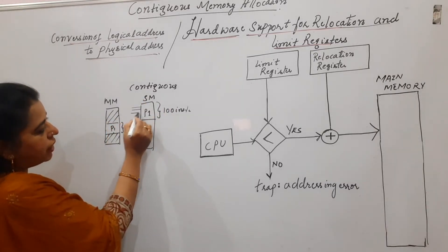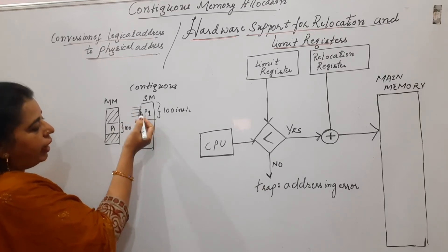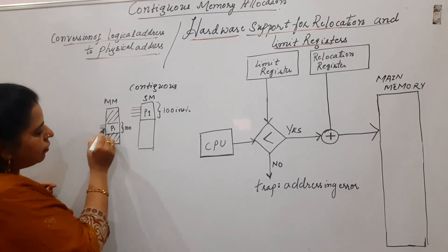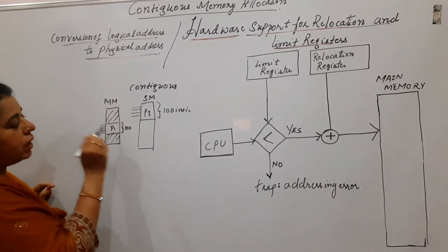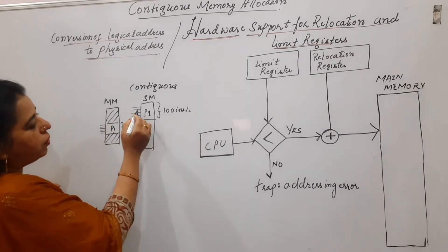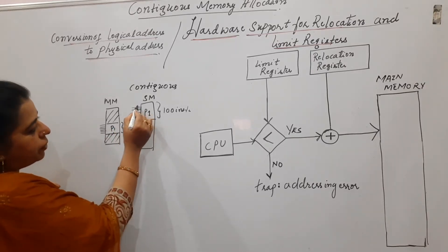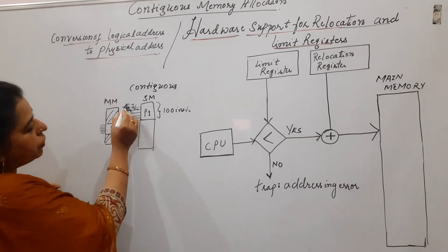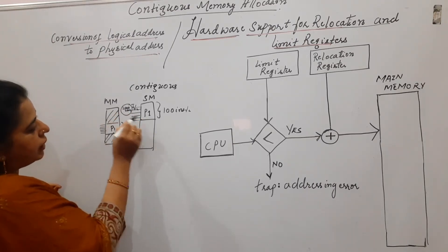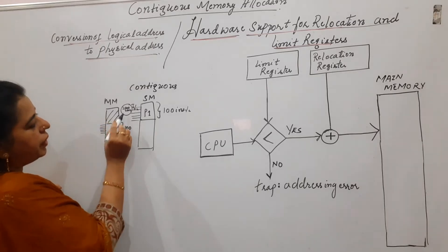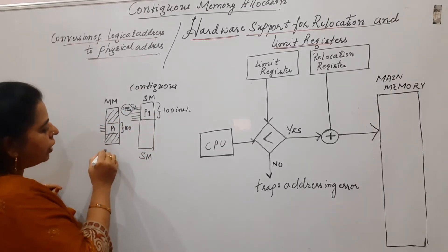If any instruction from process P1 has to be executed by the CPU, the units present in the CPU that are responsible to fetch an instruction only know the addresses that are in the secondary memory, not in the main memory. CPU always generates the logical address.